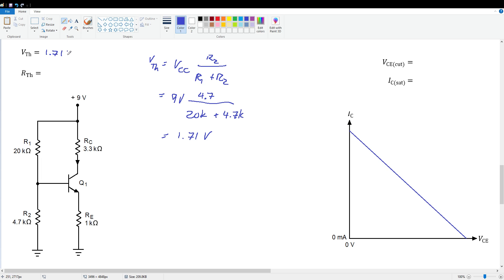We'll record that up here, 1.71 volts. Our Thevenin resistance is R1 in parallel with R2. So we've got 20K in parallel with 4.7K, which gives us an RTH of about 3.8K ohms. Let's write that up here.